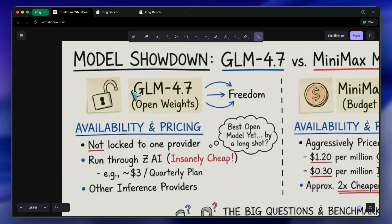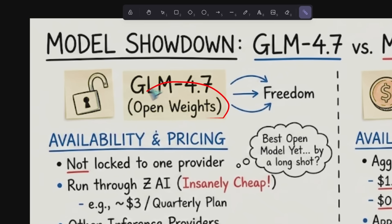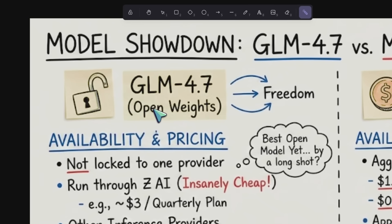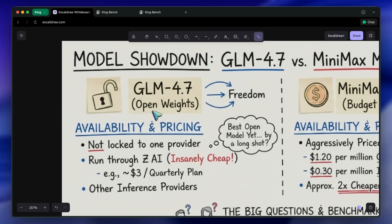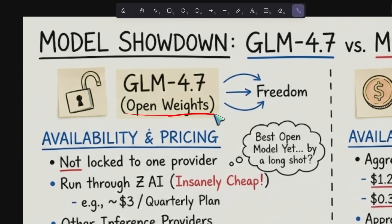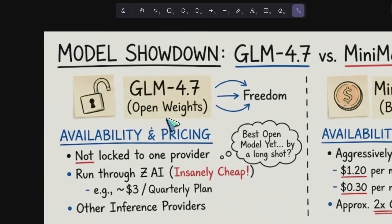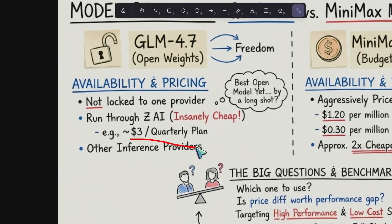On one hand, you have GLM 4.7. This is an open weights model, which means you aren't locked into one provider. You can run it through ZAI, where the pricing is insanely cheap, starting at around $3 for a quarterly plan. Or you can use other inference providers. Because the weights are open, you have that freedom.